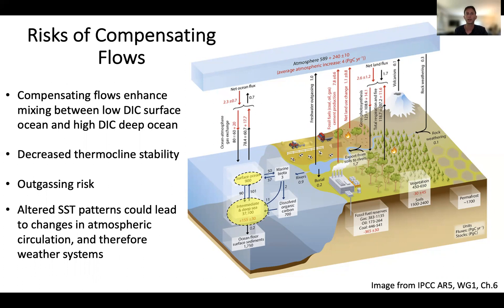A second potential consequence of artificial upwelling is the potential to modify sea surface temperature, which can then change circulation patterns and weather systems. Given the chaotic nature of weather systems, it's very difficult to foresee all the consequences of such modifications to global circulation systems.